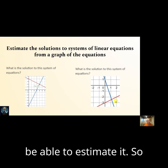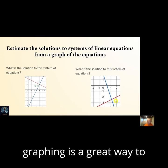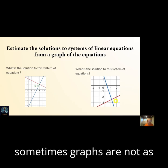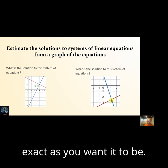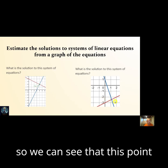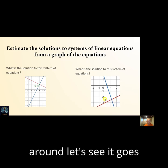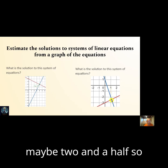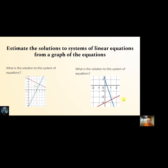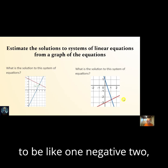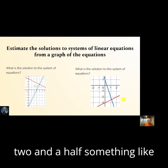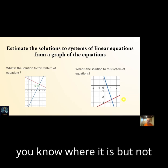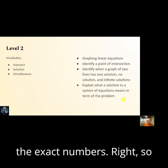This one you'll also have to be able to estimate it. So graphing is a great way to quickly find a solution, but sometimes graphs are not as exact as you want it to be. So we can see that this point is somewhere around, let's see, it goes over maybe one and a quarter and goes down maybe two and a half. So the solution to this is going to be like one and a quarter, negative two and a half, something like that. You're just estimating where it is but not the exact numbers.